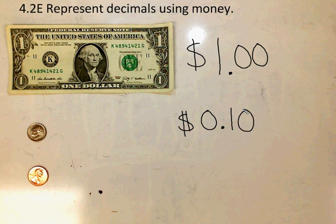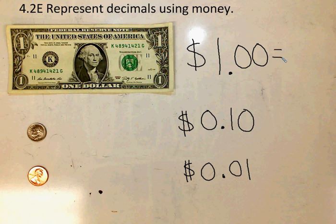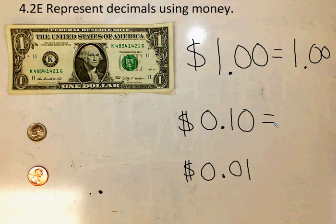We're also going to represent the penny as part of a whole dollar — zero dollars and one cent. If I was going to represent this as a decimal, the dollar would be one whole, zero tenths, and zero hundredths. My dime is zero wholes, one tenth, zero hundredths — or ten hundredths.